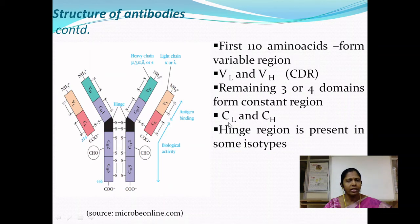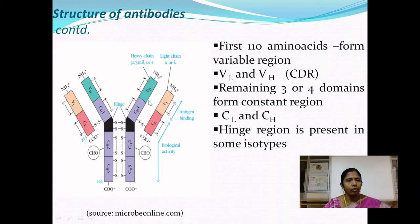Between the constant region domains, a hinge region is present in some antibody isotypes — specifically those where only four domains are present in the heavy chain. In antibody isotypes which possess five domains, there is no hinge region; the extra domain functions as the hinge region instead.